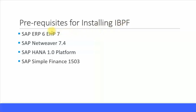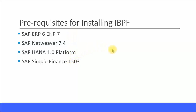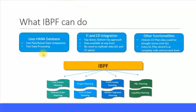Let's look at the prerequisites for installing IBPF. There are four softwares which need to be installed first: SAP ERP 6 with Enhancement Pack 7, SAP NetWeaver 7.4, the SAP HANA platform as your database, and SAP Simple Finance version 1503 or 1511. Once you have all four installed, you can proceed to installing IBPF.